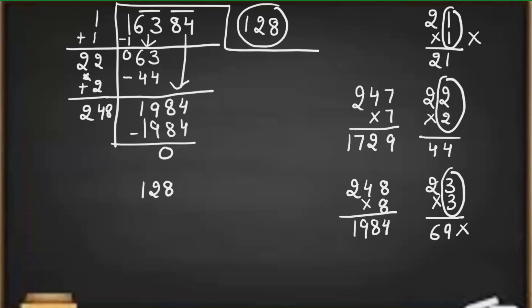The long division method takes less time than the prime factorization method, so it's up to you which method you want to follow to find the square root of a number. For more such videos, do not forget to subscribe to my channel and like the videos so that they can reach the maximum audience.